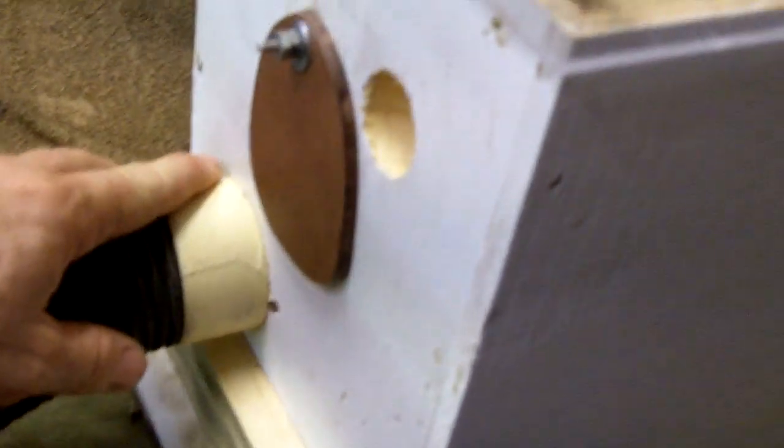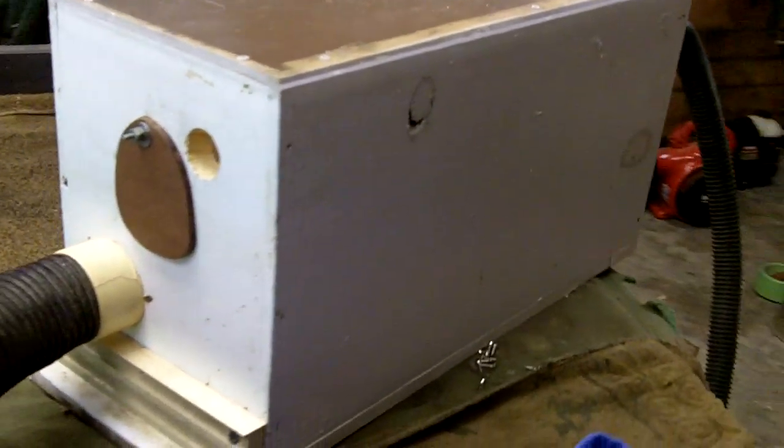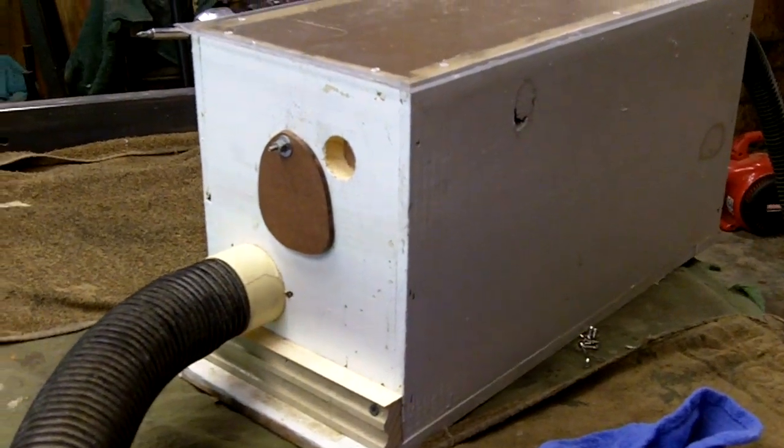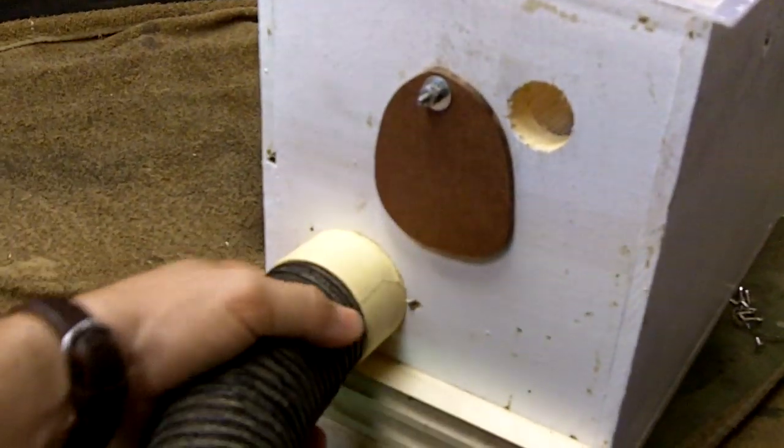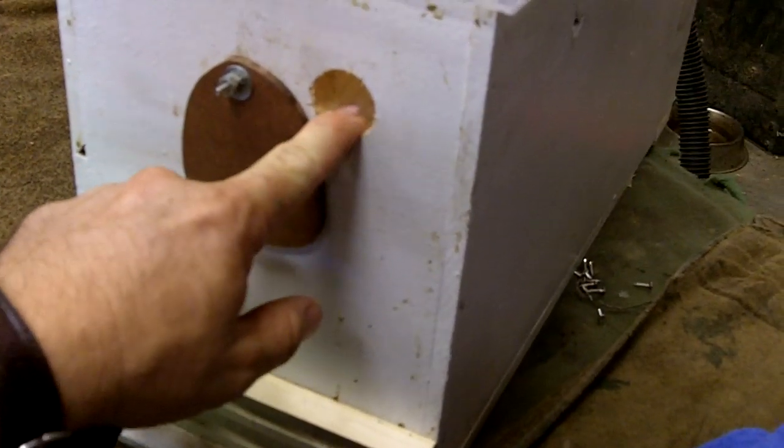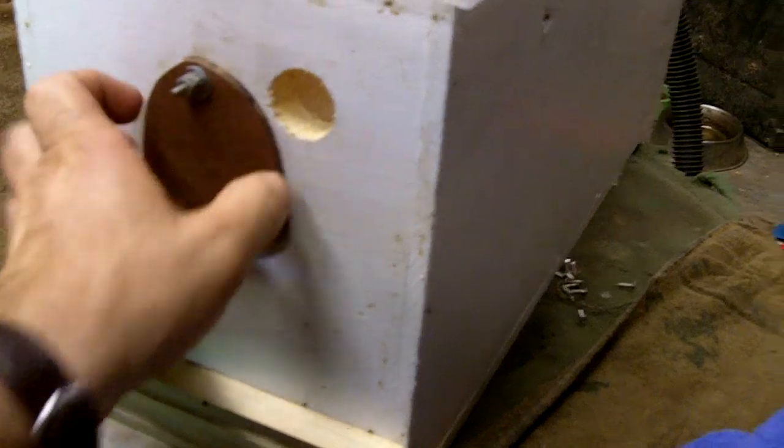I drilled a hole inside of a four-frame nuke hive, and the vac hose is joined in there. This right here is a valve and an opening with a screen behind it. I don't know if you can see that. There's a screen behind there.